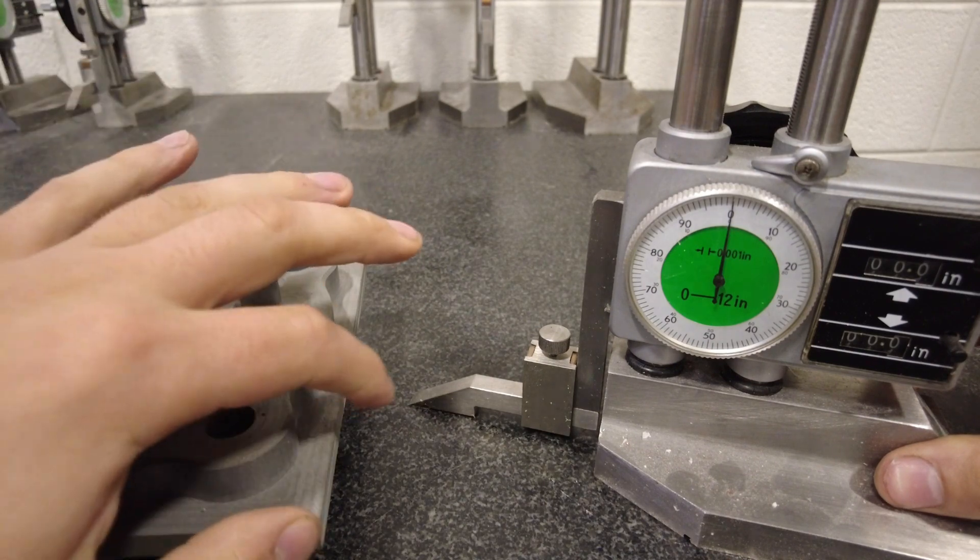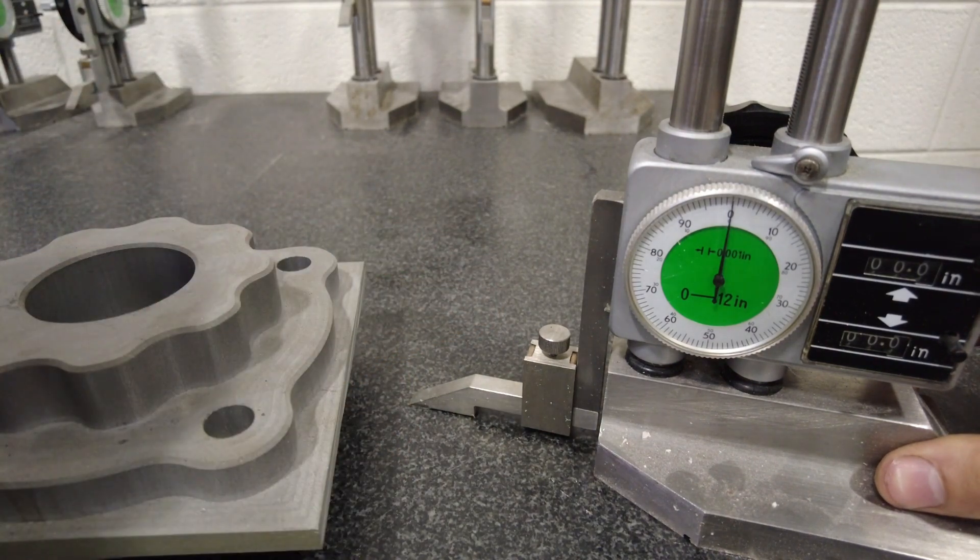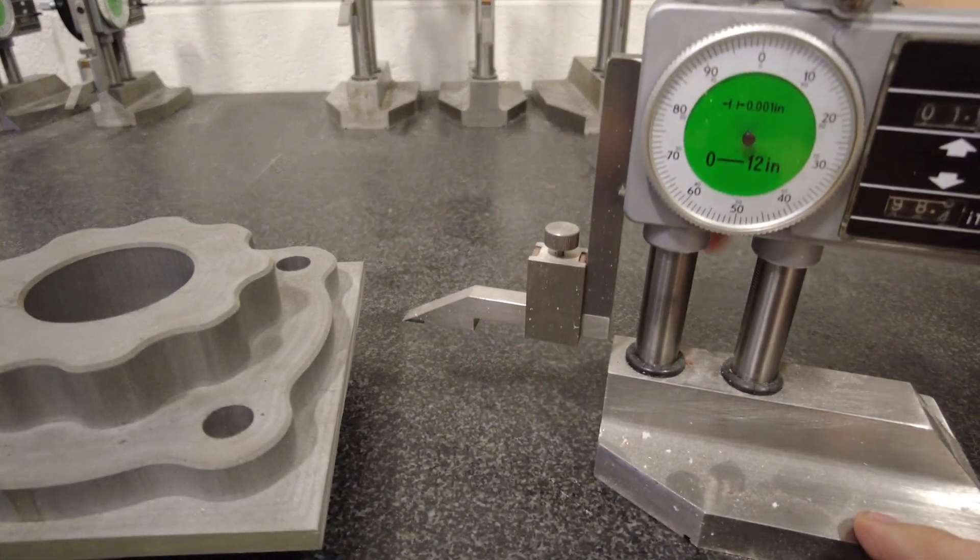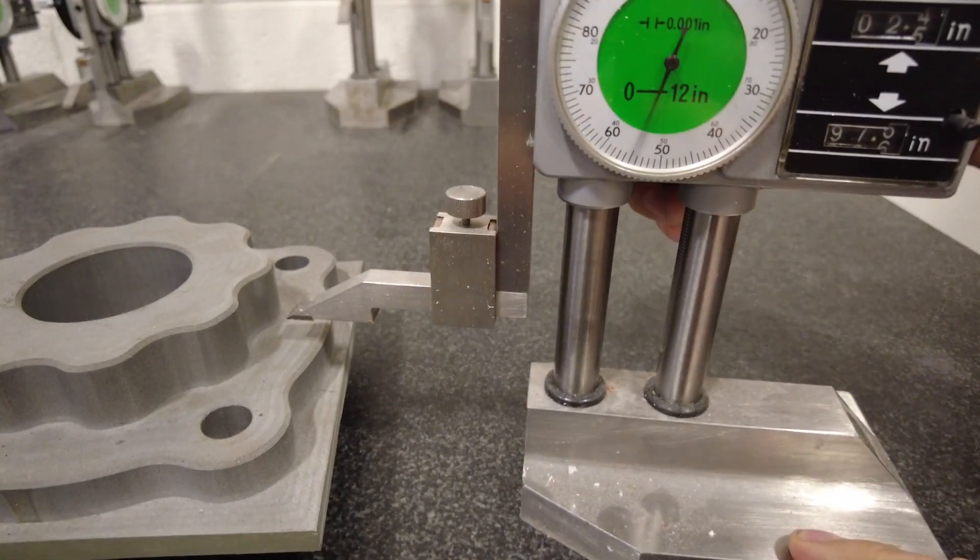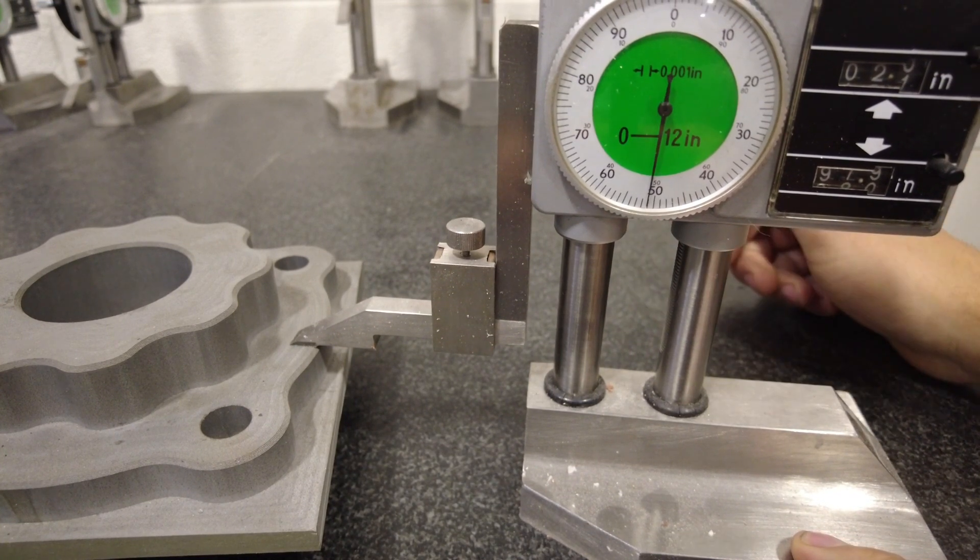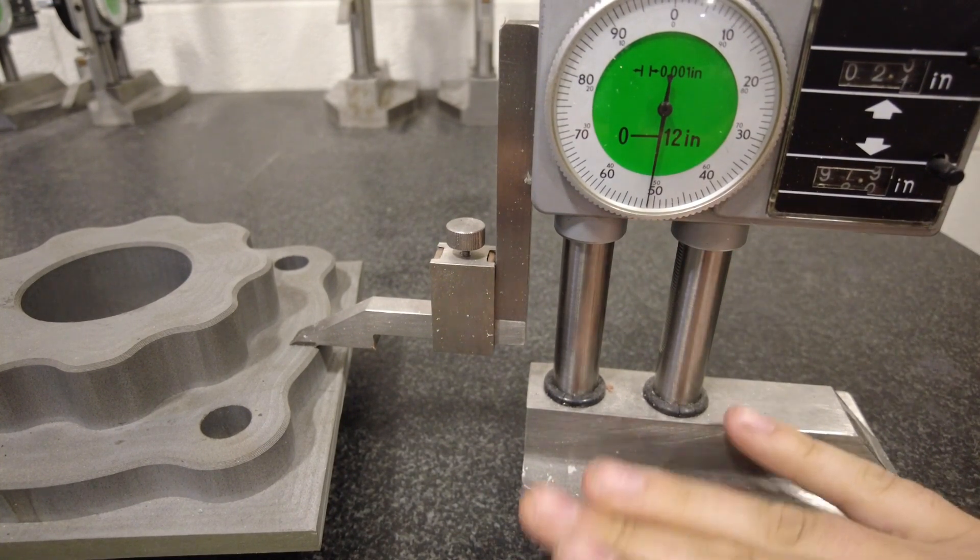For our first measurement, we're going to measure from the surface plate, where we set zero, to the top of this. I'm going to raise it up, bring it over, and then gently set it on that. Again, if you push too hard, it's going to start to lift the base up.